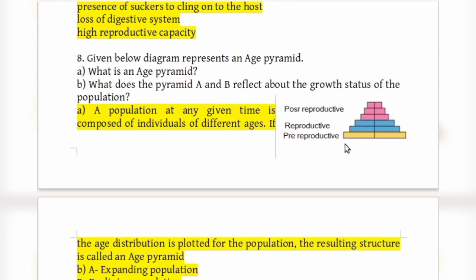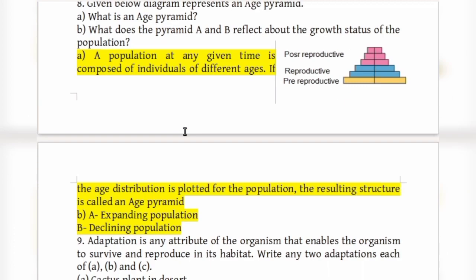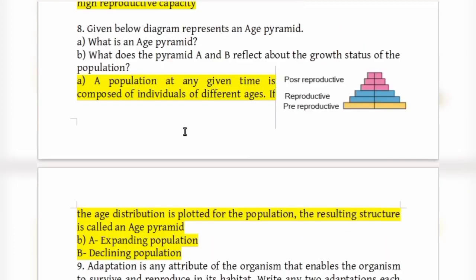An age pyramid consists of pre-reproductive individuals, reproductive individuals, and post-reproductive individuals. Pyramid A represents an expanding population, while pyramid B represents a declining population.